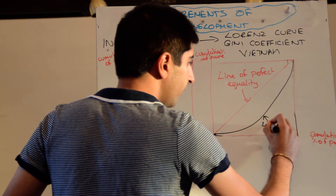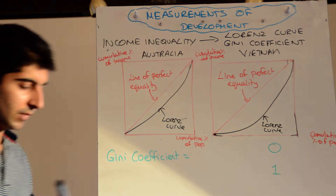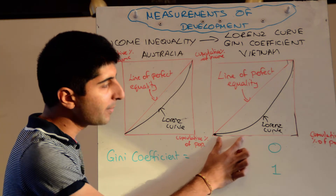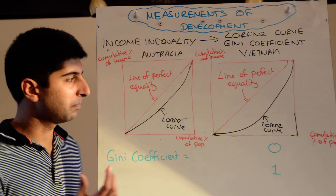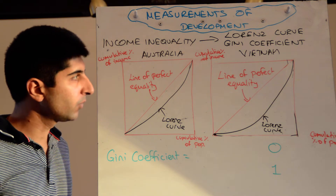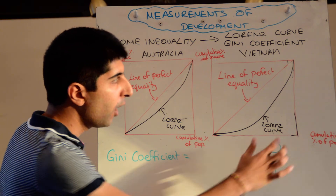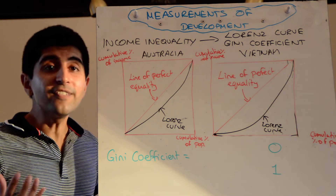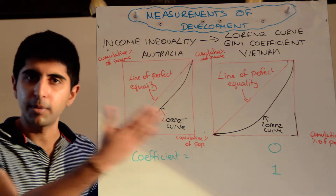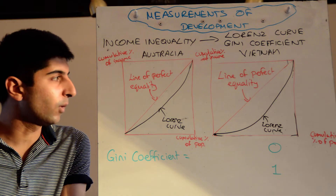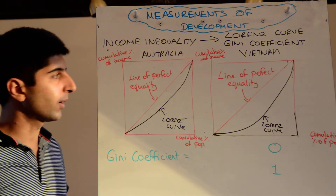If you look at Vietnam's Lorenz curve very closely, the first 20% of the population are earning a very small percent of the income — maybe 5% of the income — whereas the last 20% of the population are earning potentially 50% of the income. So again, the further away the line is from the line of perfect equality, the more income inequality there is, and that can be visually seen on these two diagrams.